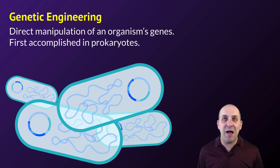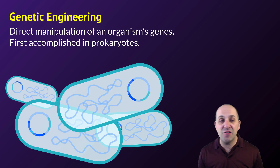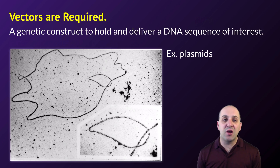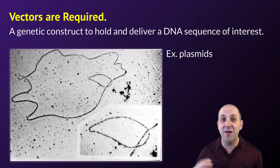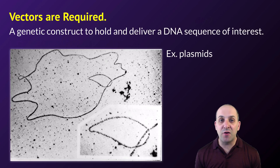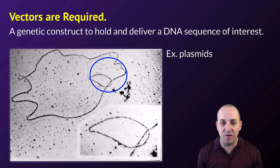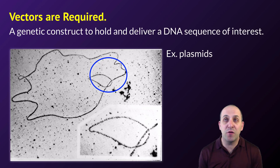Genetic engineering refers to any time we can directly go in and manipulate the genome of an organism. It's probably easiest to do and was first accomplished in bacterial cells, so that's the example we're going to look at. In order to carry out genetic engineering, you need a vector — some sort of genetic molecule that can hold and then deliver a DNA sequence of interest. A good example of a vector are bacterial plasmids, which are small, extra-chromosomal sequences of DNA that exist naturally in many bacterial cells. Because they're small and made out of DNA, they were one of the first vectors developed for use in genetic engineering.